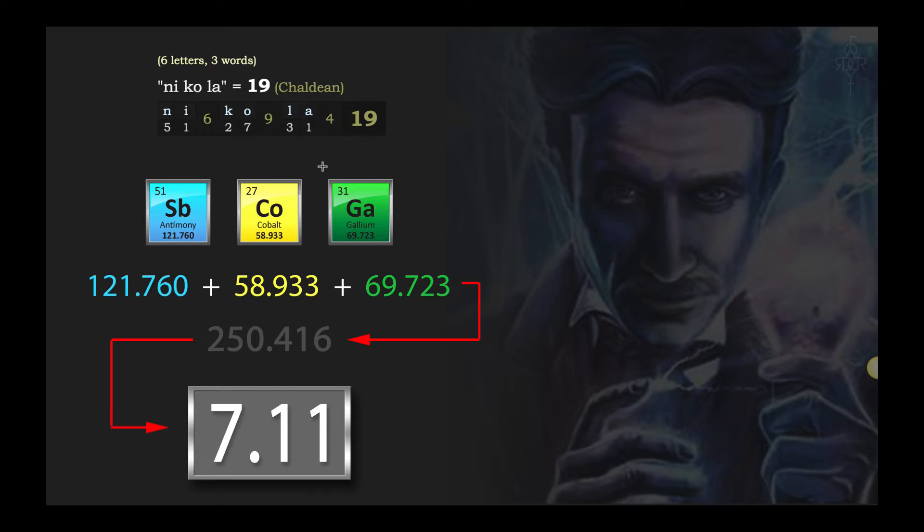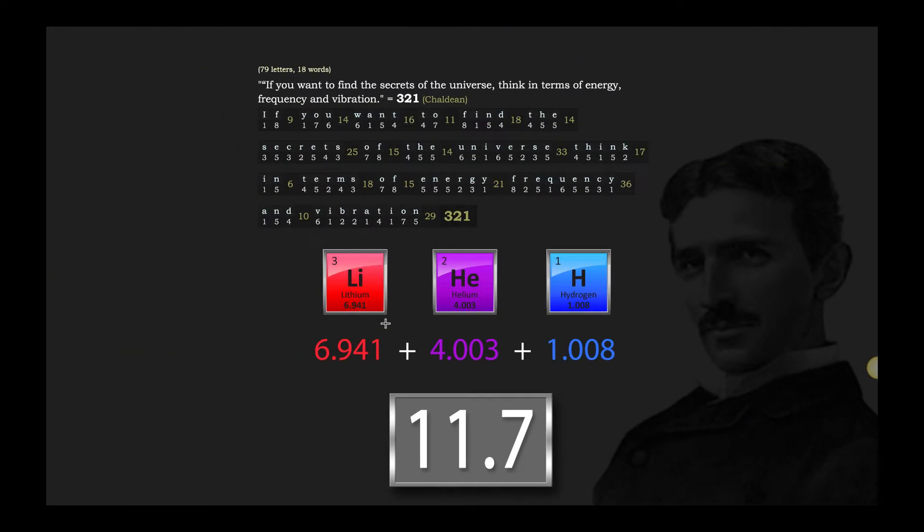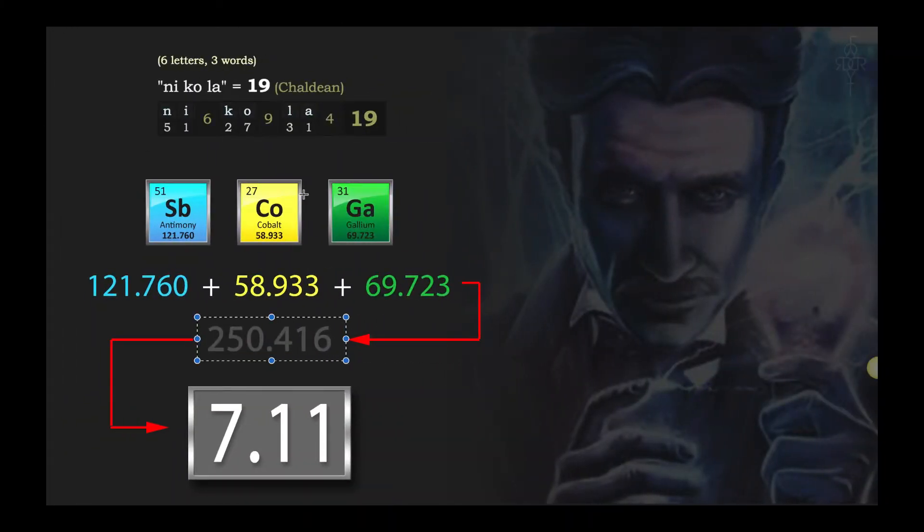So I took 'ni' as the 51, I decided to match it up with the 51st element, which is antimony. And then the 'ko' or 'co' is a 27, so I decided to correlate that with cobalt, the 27th element. And then 'la' is a 31, and that links up with gallium, the 31st element. Typically I'd go the sixth element, the ninth element, the fourth element, but I decided to do it this route tonight. And look what I found though.